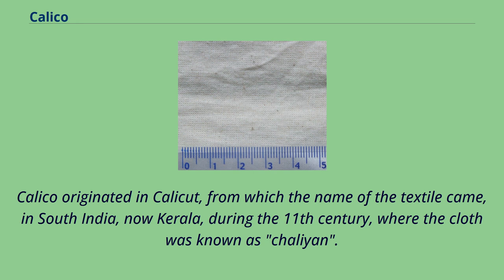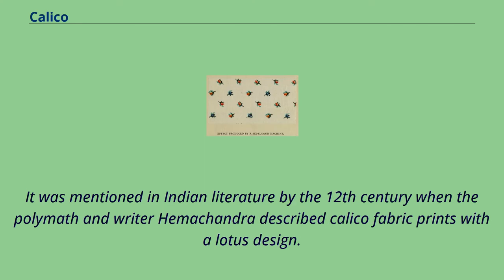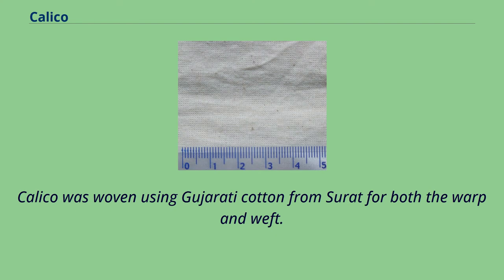Calico originated in Calicut, from which the name of the textile came, in South India — now Kerala — during the 11th century, where the cloth was known as Chayan. It was mentioned in Indian literature by the 12th century when the polymath and writer Hamachandra described calico fabric prints with a lotus design. Calico was woven using Gujarati cotton from Surat for both the warp and weft.